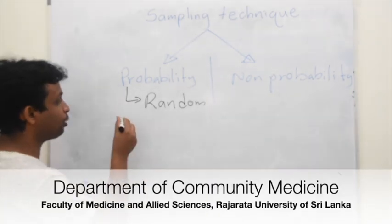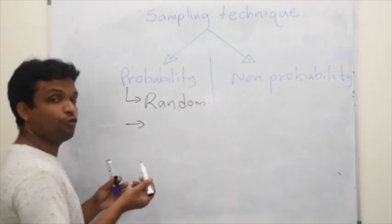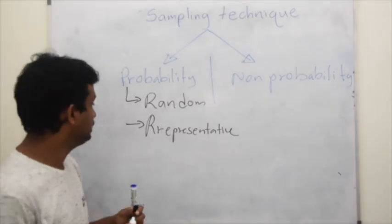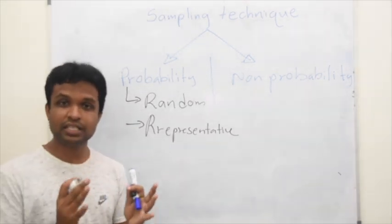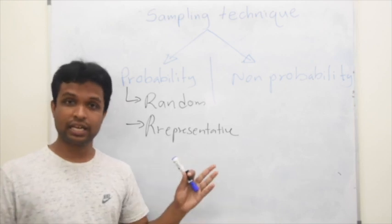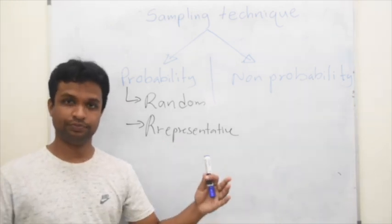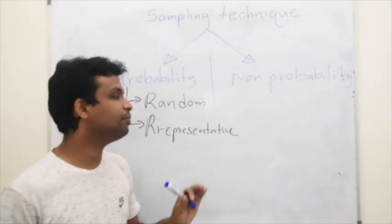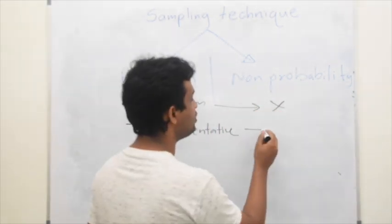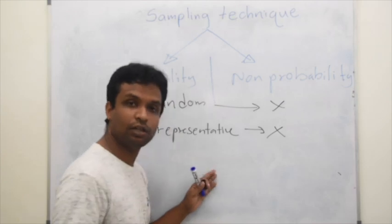Also, in probability sampling, we take a representative sample. That means once we describe the sample, we should be able to describe the population. Simply in non-probability sampling, we do not consider the randomness and we do not consider this representativeness.